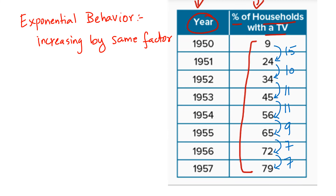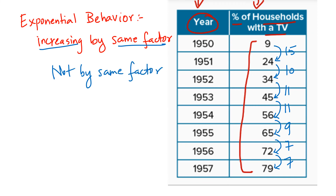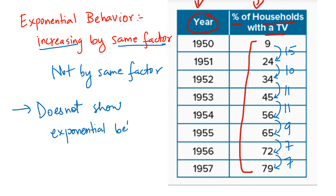Since the factor is not the same — the values are not changing by the same factor — the data does not show exponential behavior. This table of values does not display exponential behavior. The difference between exponential and linear behavior should now be clear.